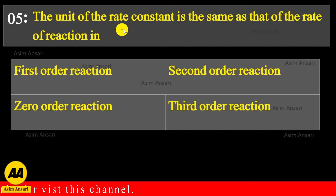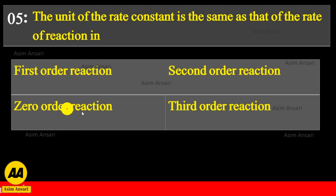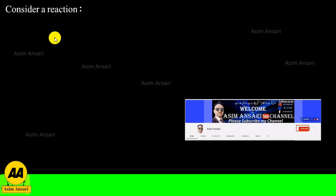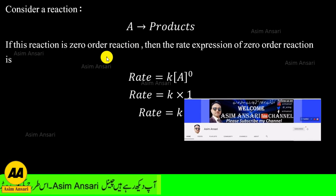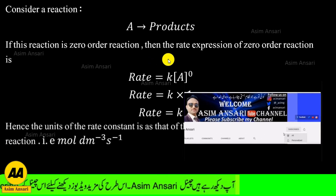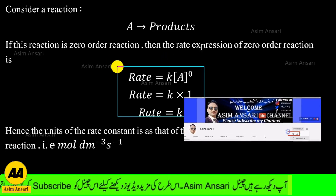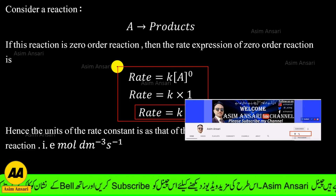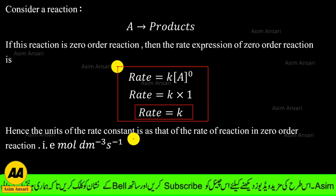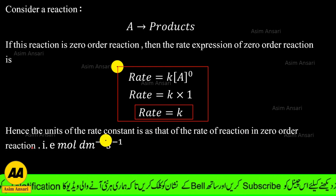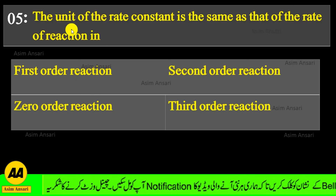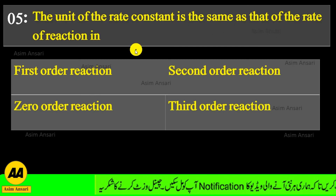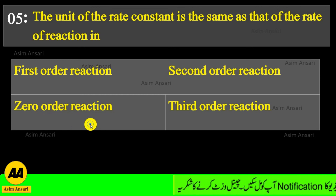Fifth MCQ: The unit of the rate constant is the same as that of the rate of reaction in — first order, second order, zero order, or third order? Consider a reaction A → product. If this reaction is zero order, then the rate expression is: rate = K. Hence the units of the rate constant are the same as those of the rate of reaction in zero order reactions, i.e., mol dm⁻³ s⁻¹. So the unit of rate constant is the same as that of rate of reaction in zero order reaction.